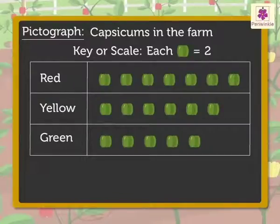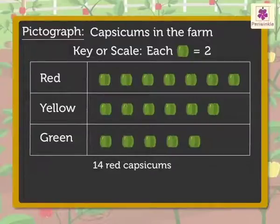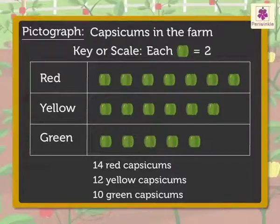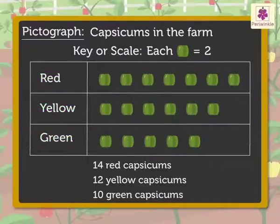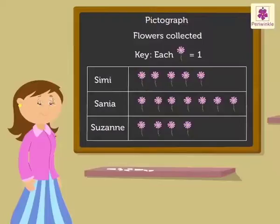Hence, from the pictograph, we can say how many capsicums there are in all, whether red capsicums are more or yellow, and so on. Hence, we can obtain a lot of information from a pictograph. Hope it was fun to learn about pictograph.